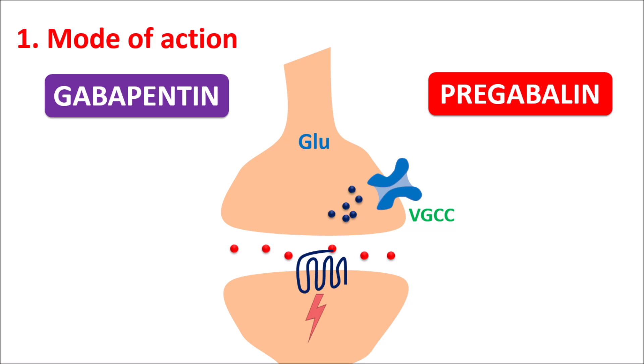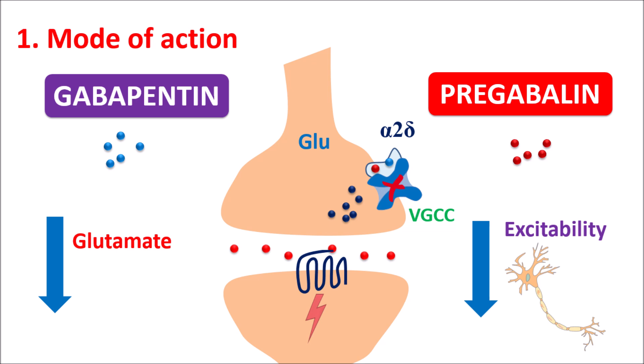In such conditions, Gabapentin and Pregabalin can control this neuronal activity. The voltage-gated calcium channels play an important role in the release of glutamate, and they have an extra pocket called the alpha-2-delta site. Gabapentin can bind to this alpha-2-delta site, and Pregabalin can also bind to the same site. Thereby they inhibit the activity of voltage-gated calcium channels. When these channels are not opened, glutamate is not released, which reduces glutamate transmission and thereby reduces neuronal excitability. This is the first similarity between Gabapentin and Pregabalin.